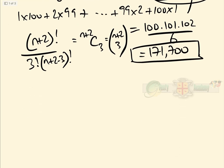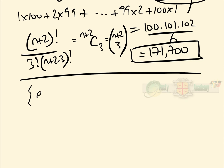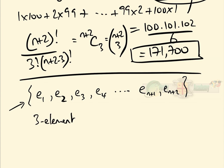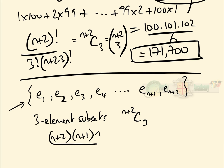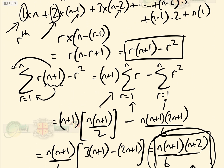We can prove this in a more intuitive way. Imagine a set of n+2 elements: e1, e2, e3, e4, ..., e(n+1), e(n+2). We're going to prove the formula by counting the number of 3-element subsets of these n+2 elements. Clearly, the number of 3-element subsets is C(n+2, 3): we have n+2 ways of picking the first, n+1 for the second, n for the third, then divide by 3! since order doesn't matter in subsets.